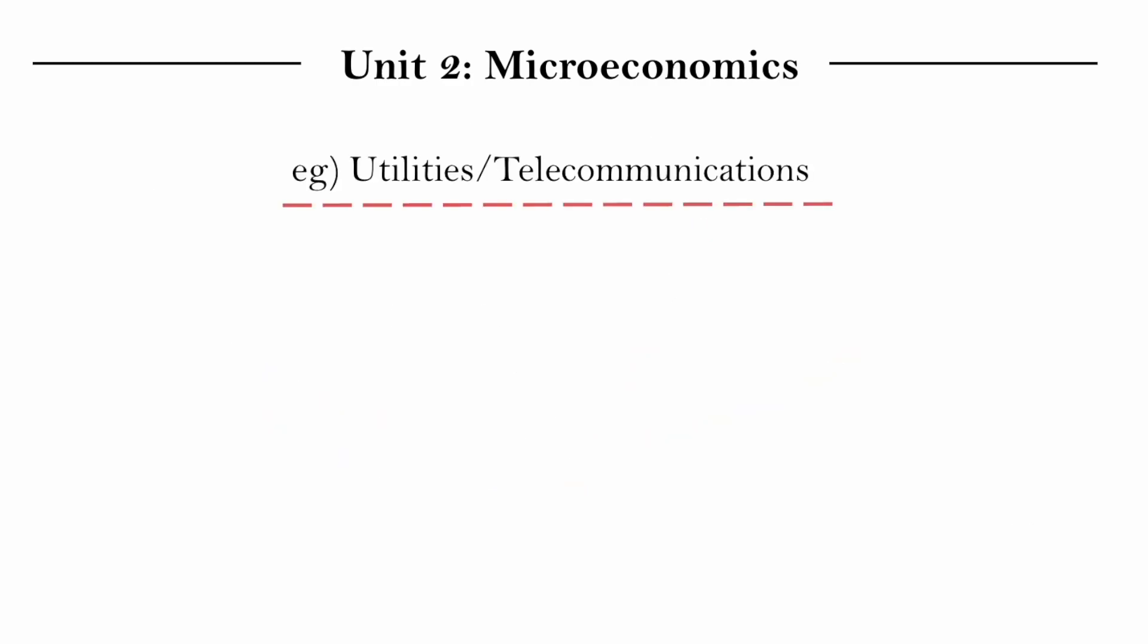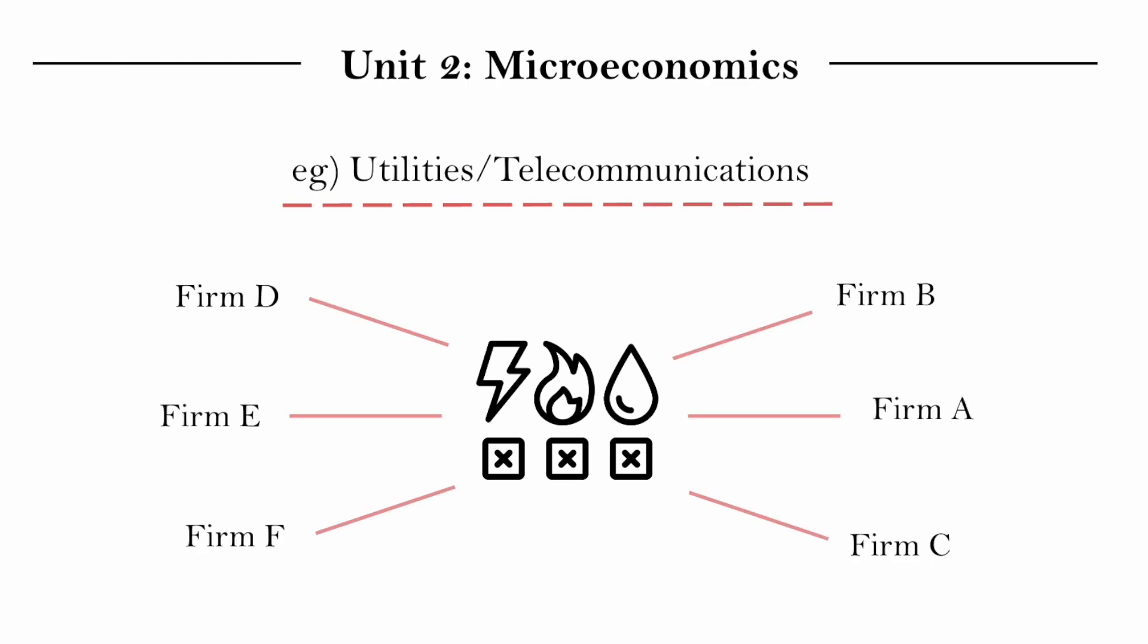Alongside economies of scale, there are other situations where it just makes sense. For example, the utilities and telecommunications, when your neighborhood is trying to get water, it does not make sense for firm A through F to all be building pipes underground. Just one firm makes the most sense.